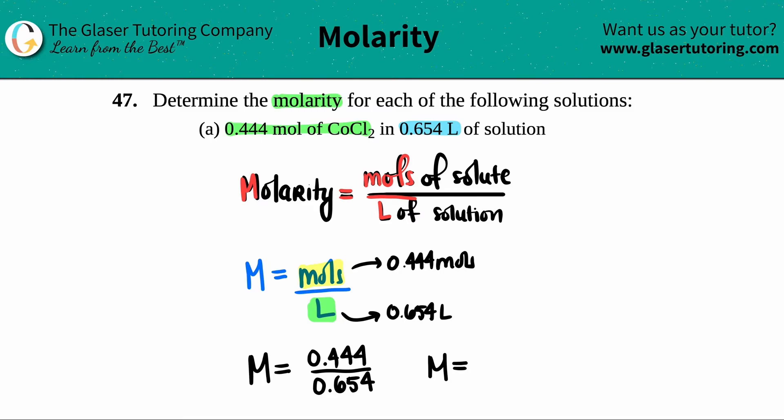And I'm going to use sig fig rules here. There's three total sig figs, that's the lowest number, so 0.679. And the units for molarity you could either do a capital M - that's acceptable - or if you want to just say that it's mole over liter, that's fine with me as well. Either one is an acceptable unit for molarity, and that's the answer here.